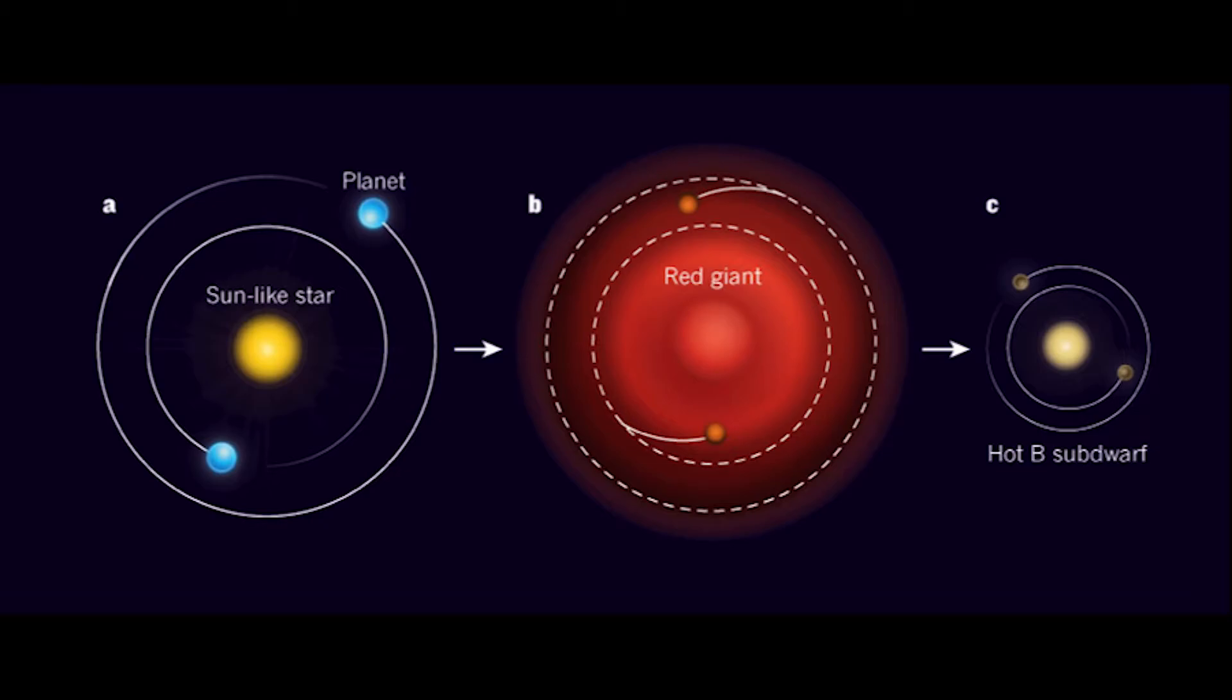As the star contracted and became smaller, the two planets no longer remained inside the star. But what remained of the planets were just the burnt up cores.